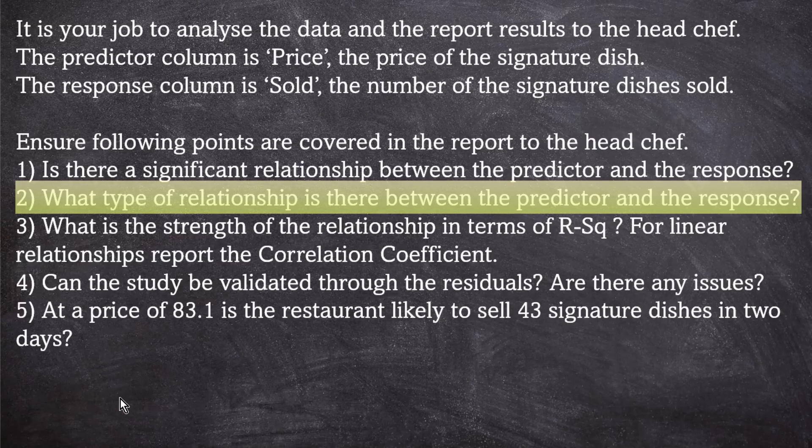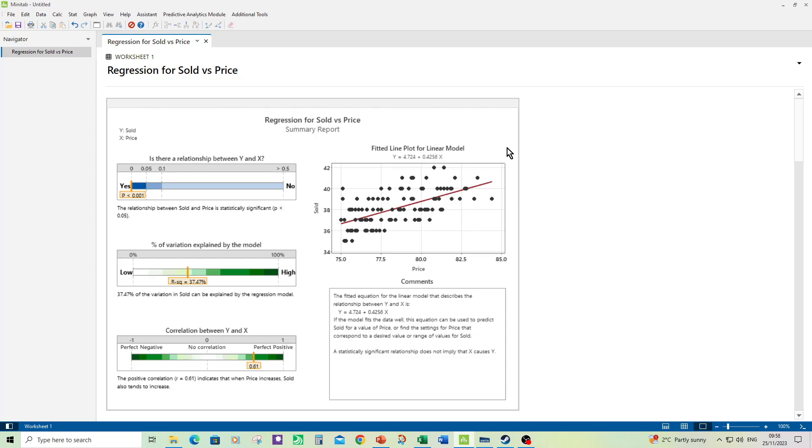Next we have to answer the question what type of relationship is there between the predictor and the response? So if we go to the fitted line plot on the top right of the summary report we see a straight red line so it's a linear relationship. And the other thing that confirms it's a linear relationship is the regression equation there and also we see a correlation coefficient bar. That also tells us it's a linear relationship because we wouldn't get that if it was a quadratic.